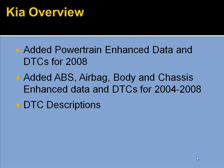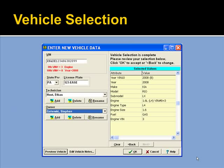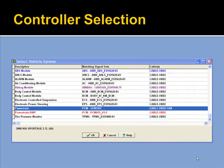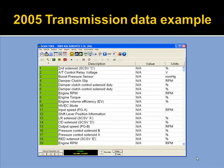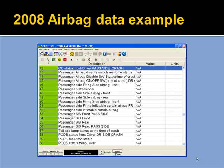For Kia, not a lot in this version — we're working on more right now. But for right now, we've updated the powertrain tool through 2008 and updated the 2004 through 2008 ABS, airbag, body, and chassis, as well as quite a few DTC descriptions for Kia. Here's the vehicle selection screen and the controller selection — you can see ABS, airbag, body, powertrain, tire pressure monitors, and so on on the Kia vehicles. Here's an example of transmission data and airbag data on Kia.